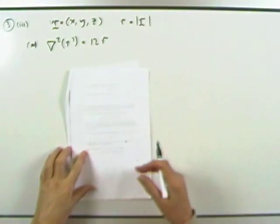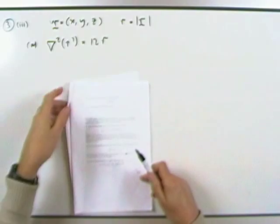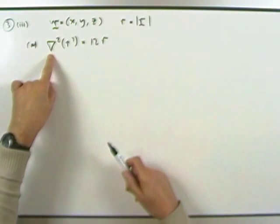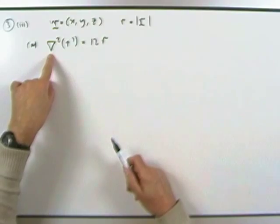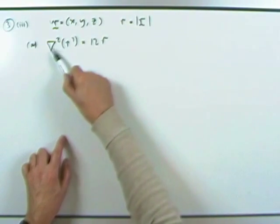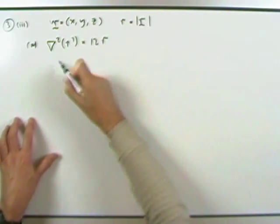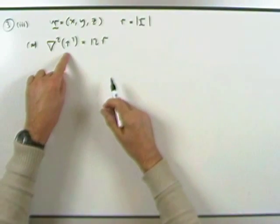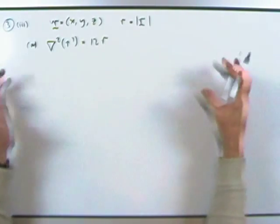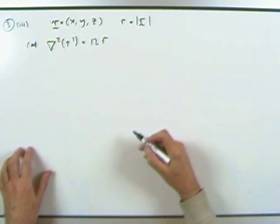The third part: some del or nabla operations. The first one says find the Laplacian of R³, where R is just the length of the position vector — so it's the Laplacian of this scalar field. That means doing grad first to produce a vector, and then div of that vector, which should produce 12R.